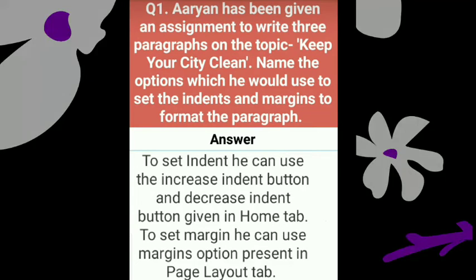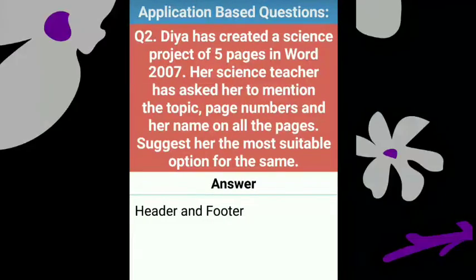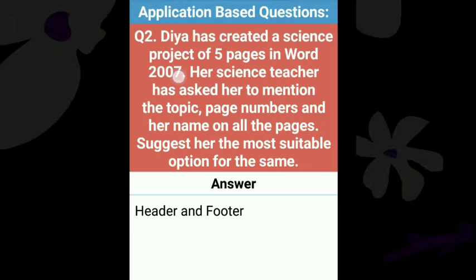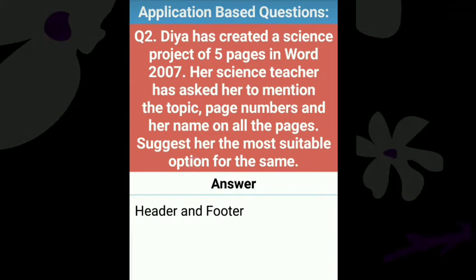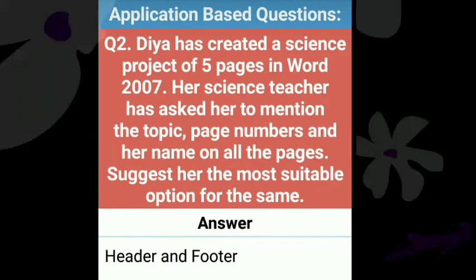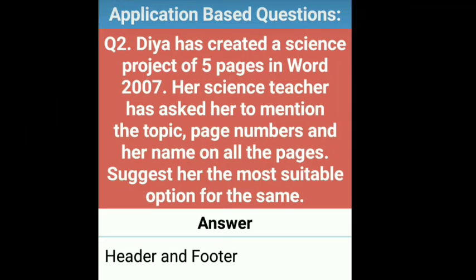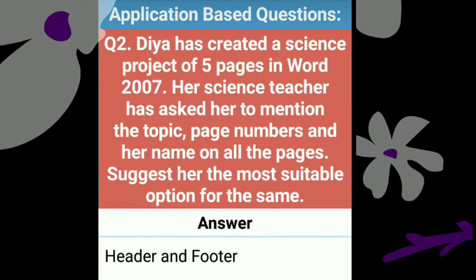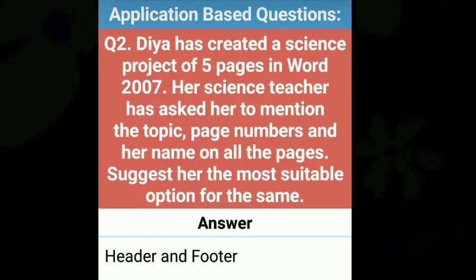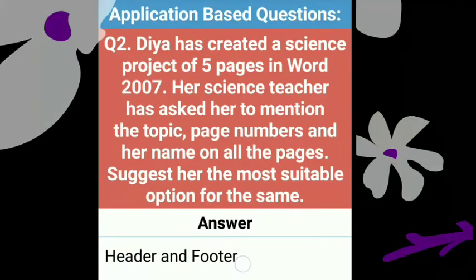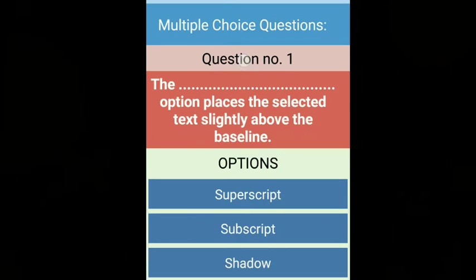The second application-based question: Dia has created a science project of five pages in Word 2007. Her teacher has asked her to mention the topic, page number, and her name on all the pages. The most suitable option is Header and Footer, which is displayed in the margin of the page. Using that option, she can mention the page number, name, and topic on all pages of the document.